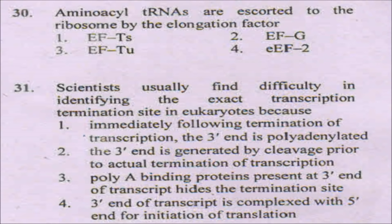The next question is: aminoacyl-tRNAs are escorted to the ribosomes by which elongation factor? As I have clearly explained in my lecture on protein synthesis or translation, elongation factors Tu and Ts are involved during elongation. Specifically, elongation factor Tu is responsible for escorting aminoacyl-tRNAs to the ribosomes — it comes along with GTP, and when GTP is hydrolyzed, Ts will again exchange it with GTP. So the answer will be elongation factor Tu.